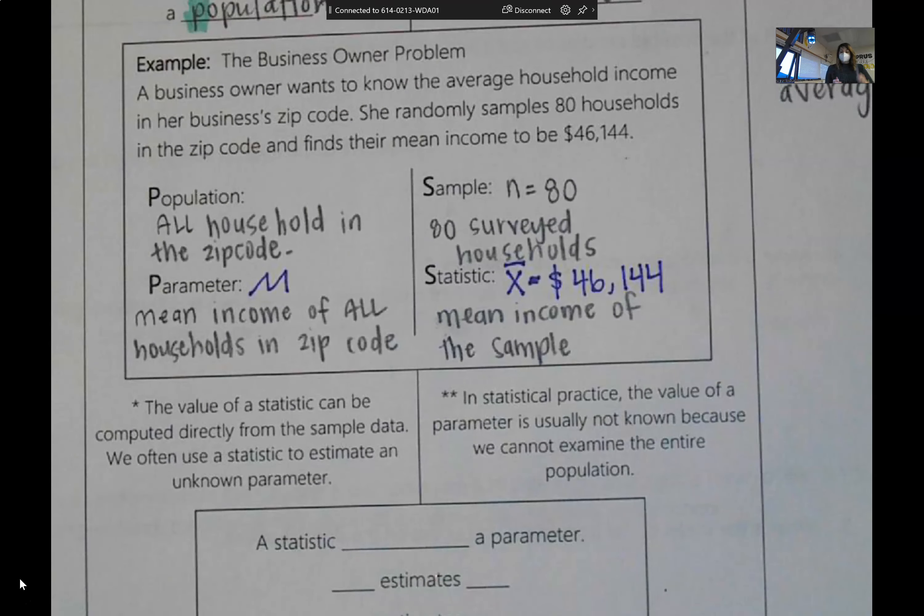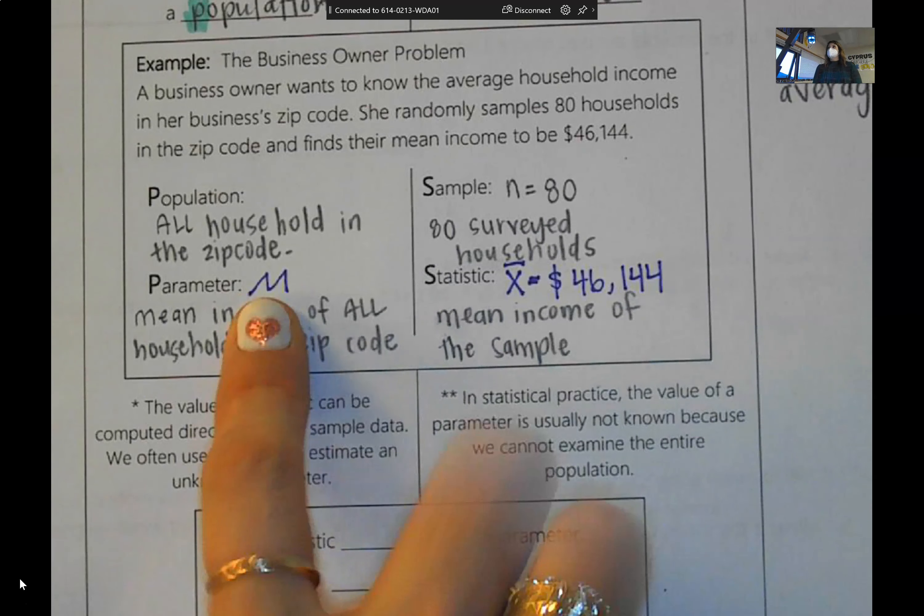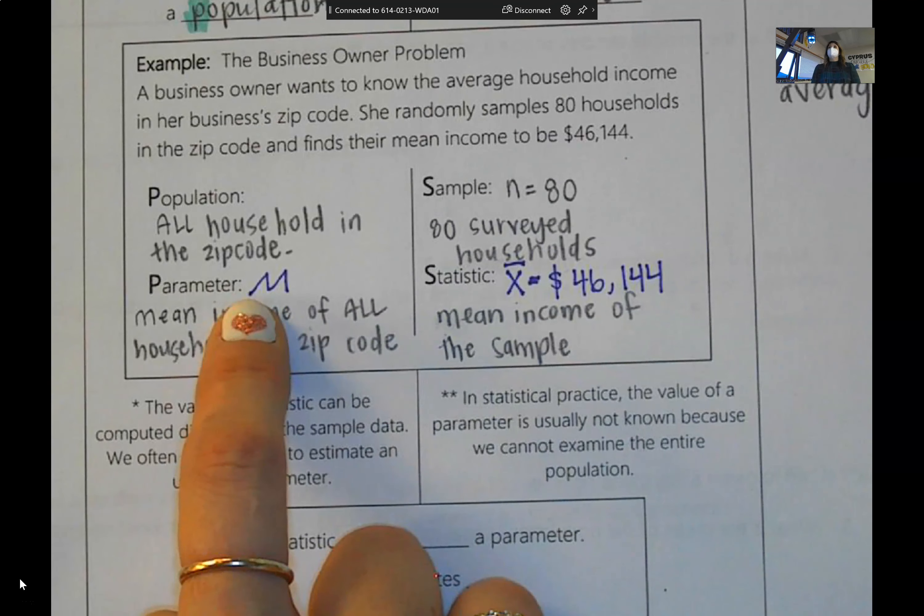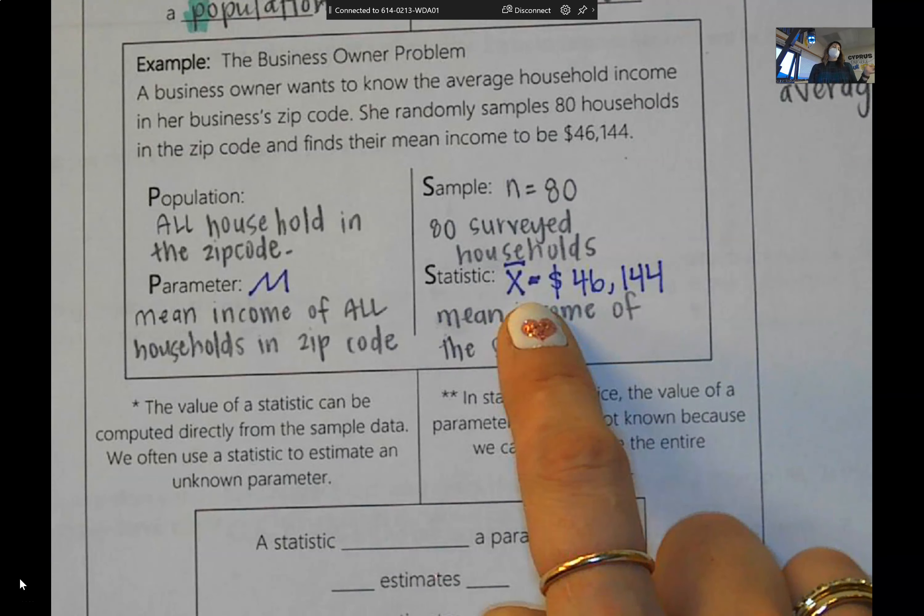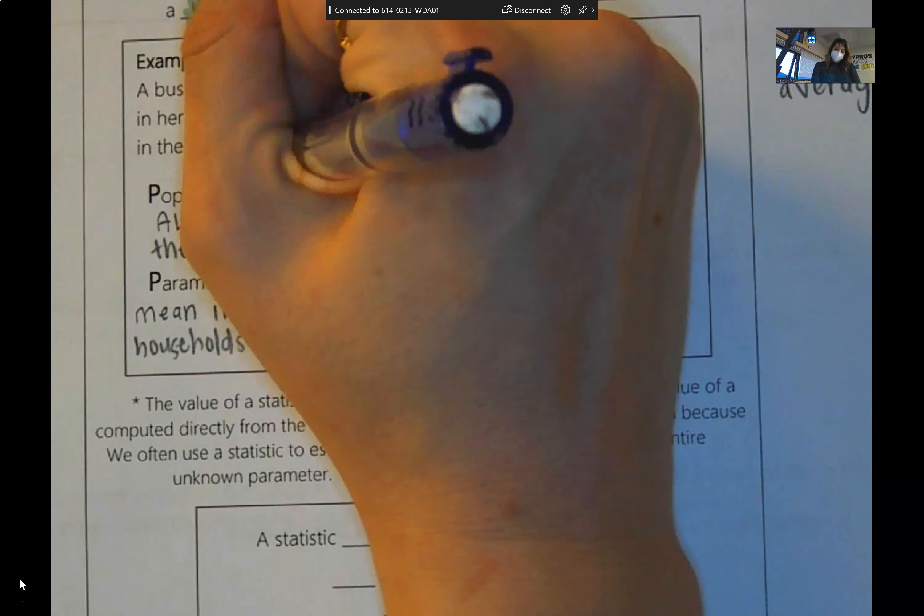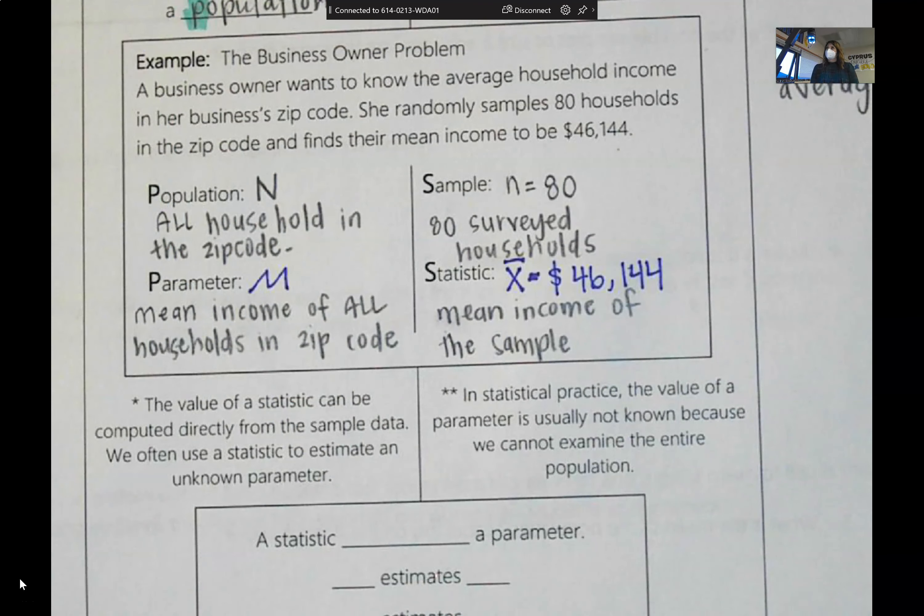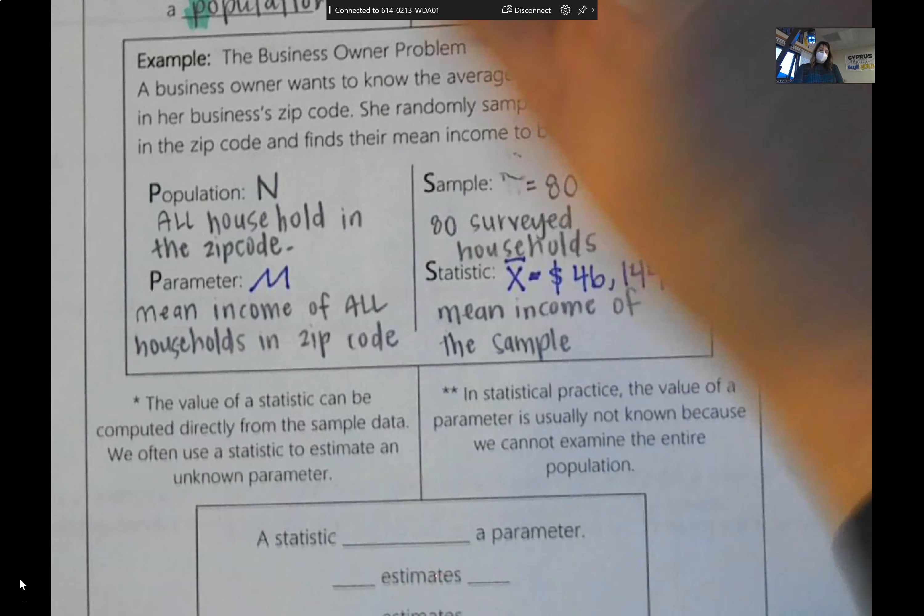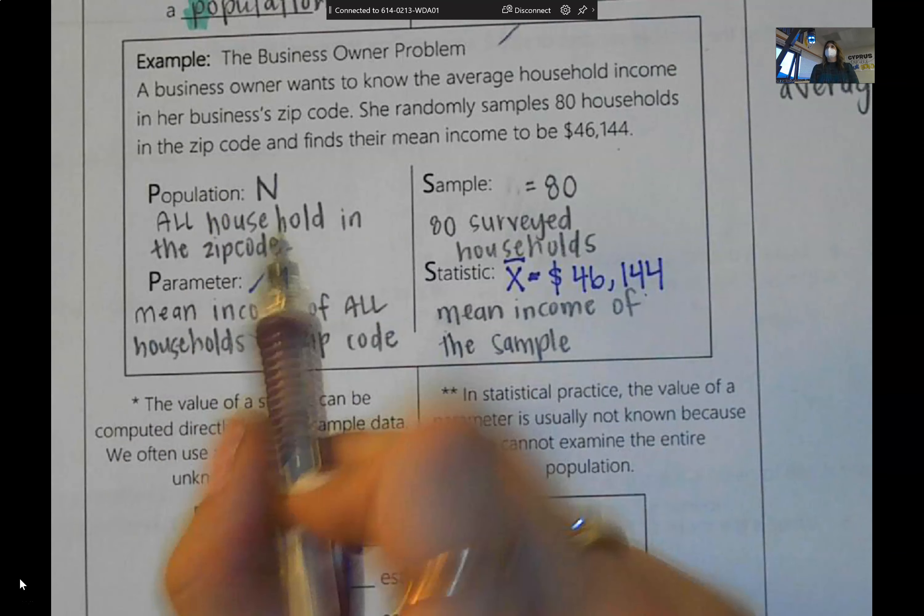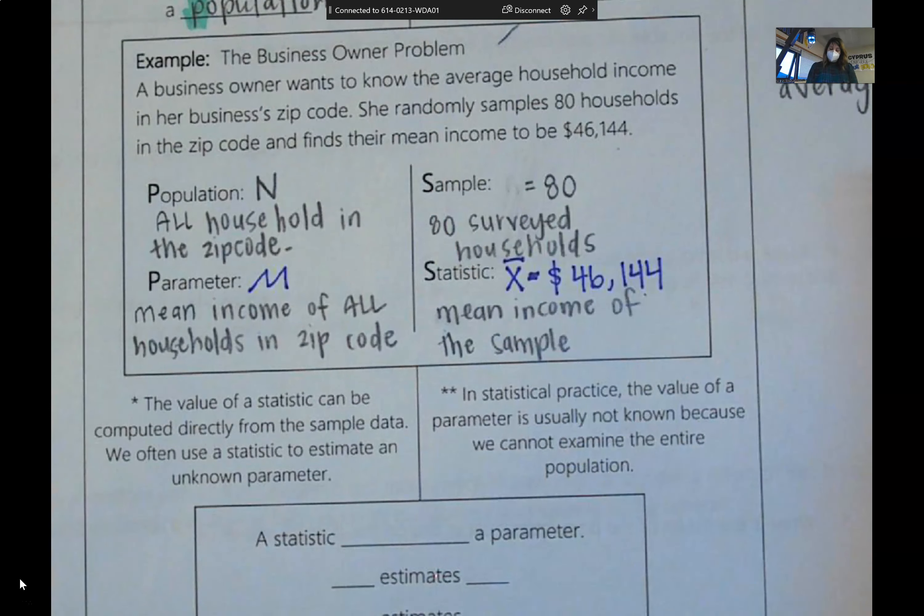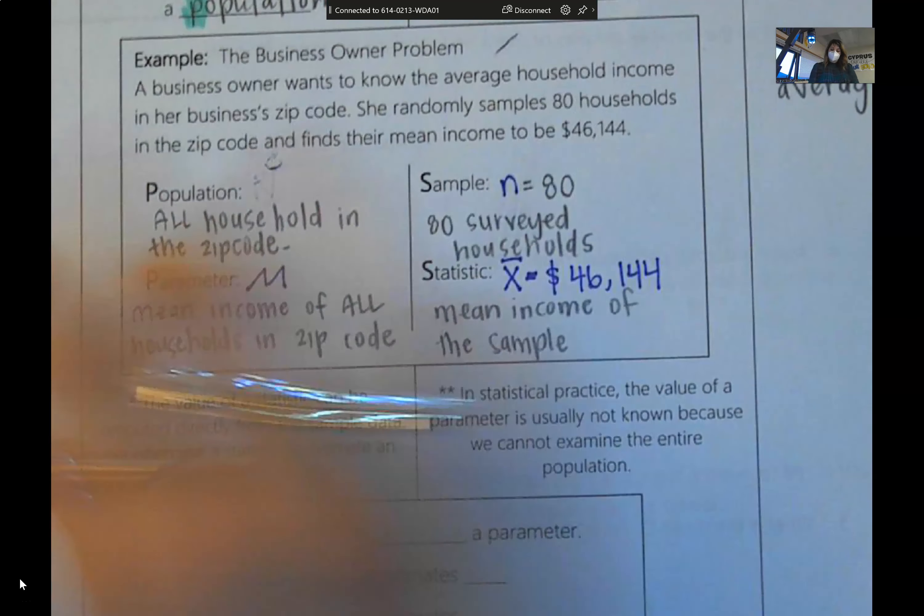So now we know we're going to need to keep an eye out for these different symbols. If it says mu, we actually know the population value. If it says x bar, we have a sample value. Population sample size is capital N. The population size is N. The sample size is little n. So the true number in the population is capital N. The sample is little n.